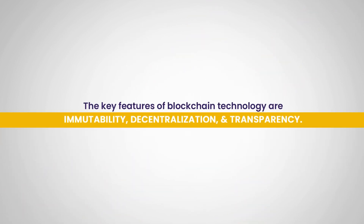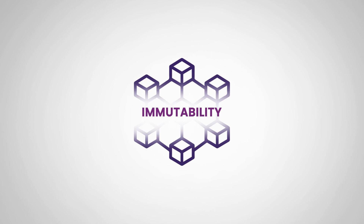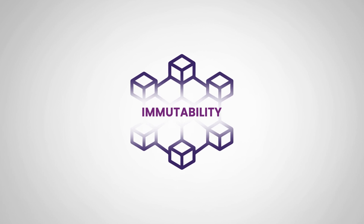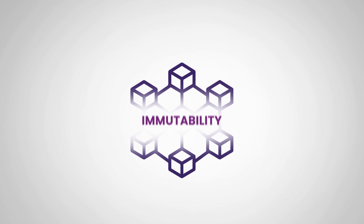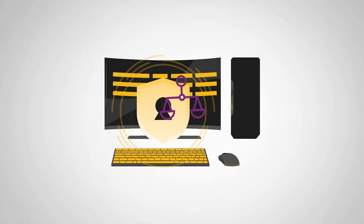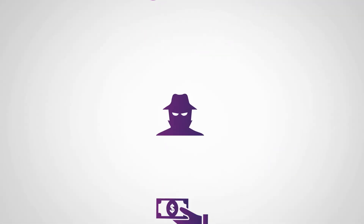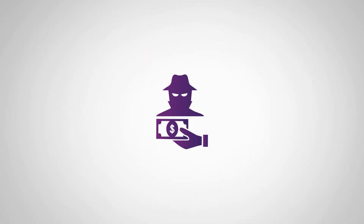The key features of blockchain technology are immutability, decentralization, and transparency. Immutability means that once the data has been recorded on the blockchain it cannot be altered or deleted. This ensures the integrity of the data and reduces the risk of fraud and corruption.